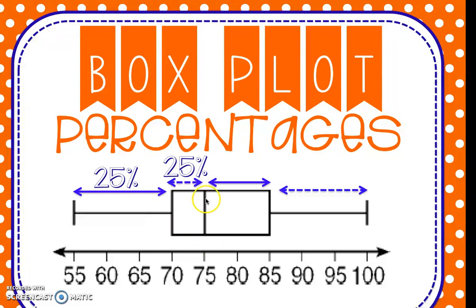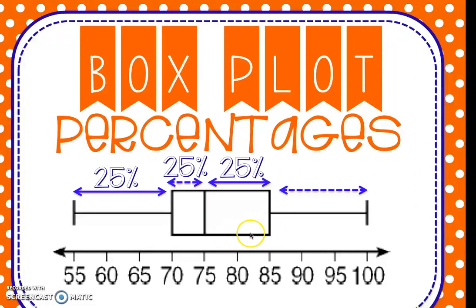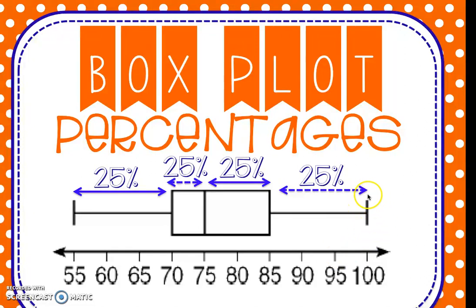This section from the lower quartile to the median is another 25%. If you got a 75 on this test, here's 25% and here's 25%, so you would be right in the middle — the 50th percentile. Obviously from the median to the upper quartile is another 25% of data. If you got an 85 on this test, that's 25%, 25%, 25%, so that would be the 75th percentile. The last section from the upper quartile to the upper extreme is the last 25% of data. If you got a 100%, that means you scored in the hundredth percentile — better than 100% of people that took this test.